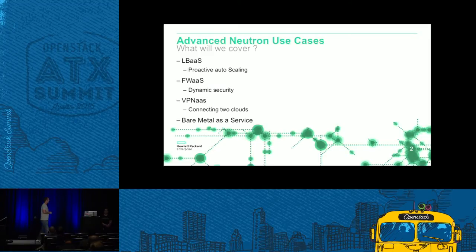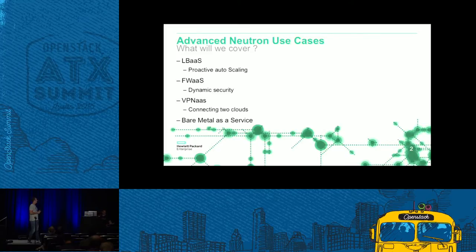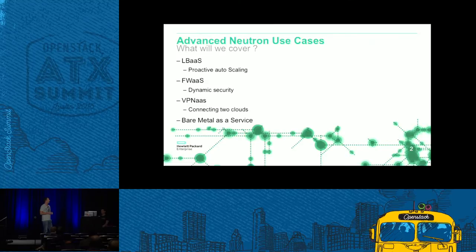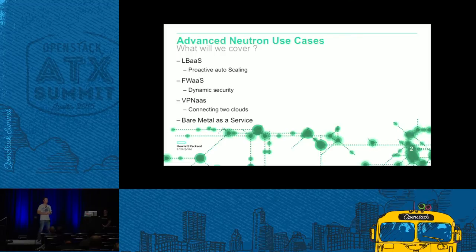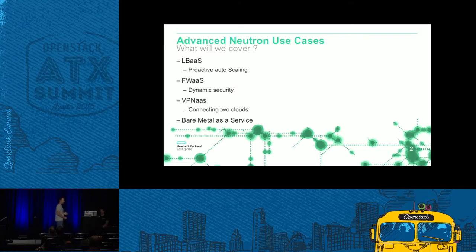This afternoon we'll start off with Load Balancer as a Service — what the customer was trying to achieve — and go straight into a live demo. Everything we're doing today is a live demonstration. Then we'll move into Firewall as a Service, then VPN as a Service with another live demo where we'll actually be joining two OpenStack clouds together. We'll also touch on backend as a service there. The last example with a live demonstration will be bare metal provisioning as a service, utilizing Ansible. For live demonstrations this afternoon — what could possibly go wrong?